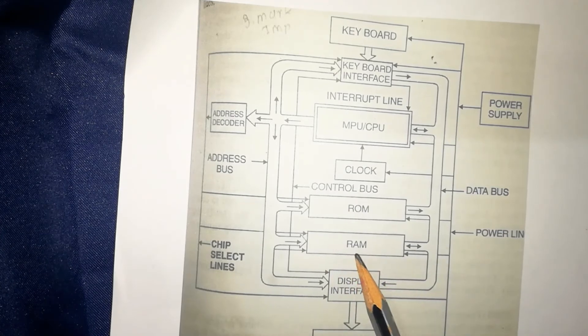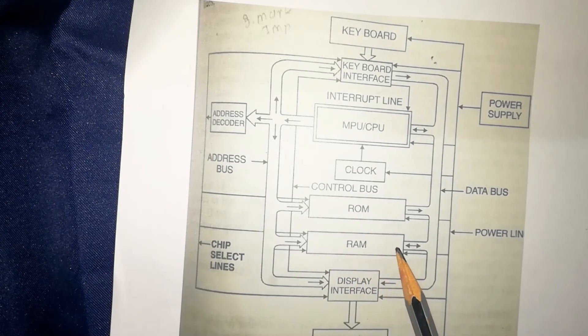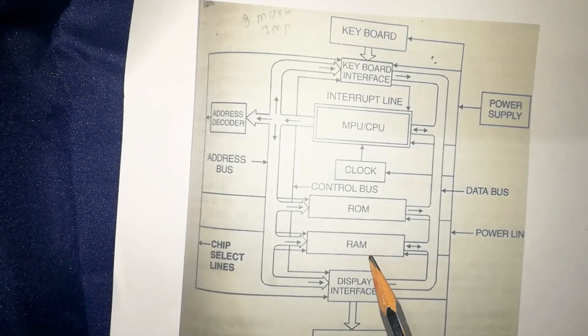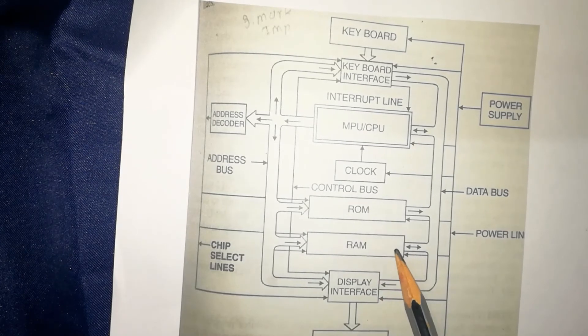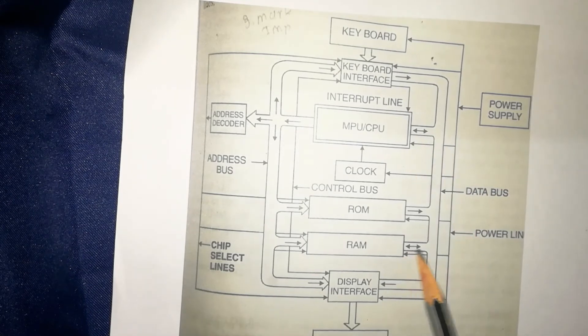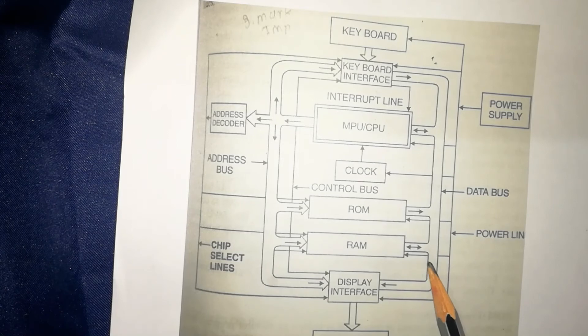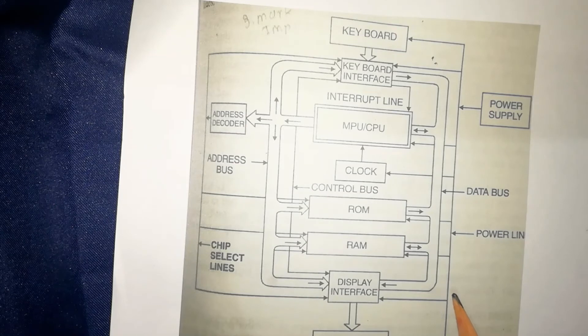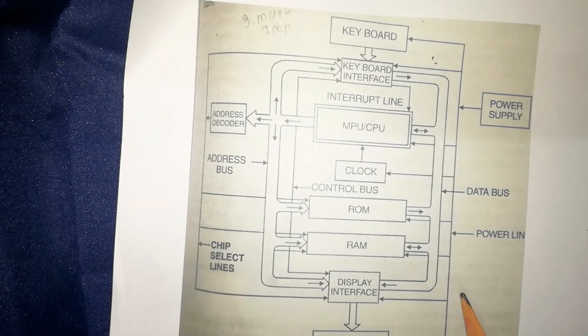It is also called as read-write memory, that is data memory, and bidirectional bus is required here. You can see bidirectional bus is required to read and write data from the memory. RAM has address input lines and chip select, read or write enable lines.